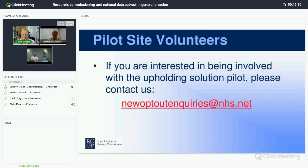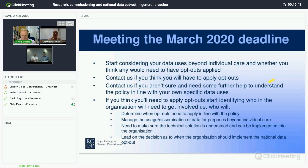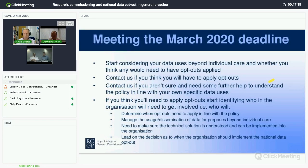If anyone is interested in joining the pilot, please contact us through the mailbox shown. The hard and fast deadline is March 2020 for all organisations being compliant — it seems far off but it will come around quickly. It's quite important that all organisations start thinking now about scenarios where data is being used beyond individual care and whether opt-outs need to be applied. Please contact us if you think you'll need to apply opt-outs, need assistance understanding the policy, or want to get involved in the pilot and engage with the service into 2019.